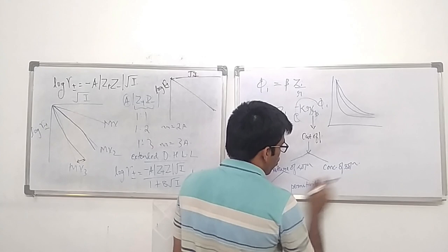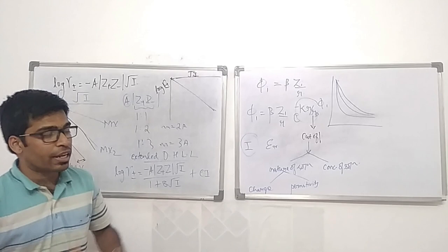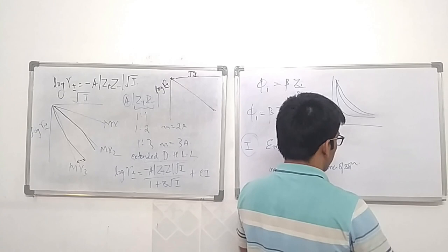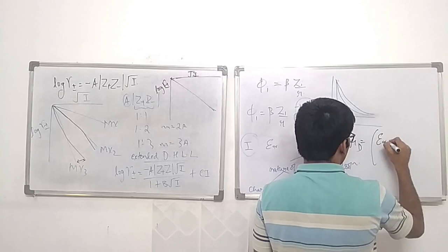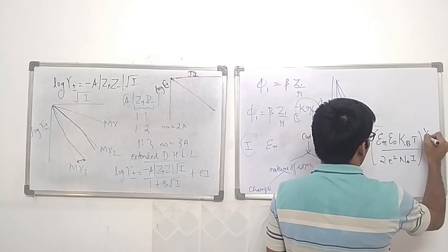Both concentration and charge are contained in the ionic strength, and permittivity is represented by εᵣ. The Debye-Hückel screening length is given by: r_D = (εᵣ ε₀ k_B T / 2e²N_A I)^(1/2).